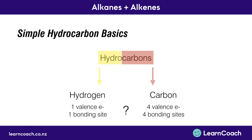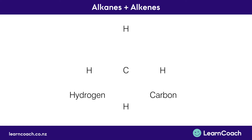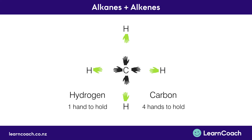So what does this mean in terms of our hydrocarbons? Let's think of it as an easier example, like hand holding. Each hydrogen atom has one hand to hold, whereas each carbon atom has four hands to hold. So when all of these hands are held, you can see there are four hydrogens for each carbon.